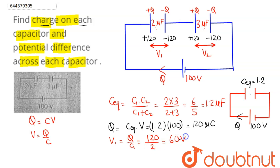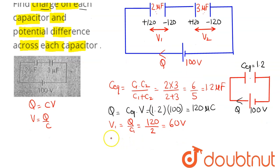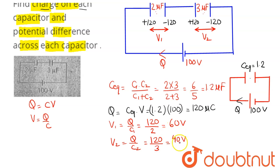In a similar manner, V2 = Q/C2 = 120 divided by 3, which comes out to 40 volts. So this is the potential across each capacitor and the charge on each capacitor.